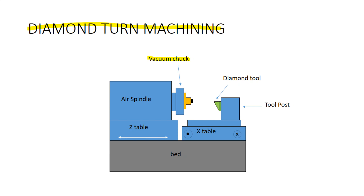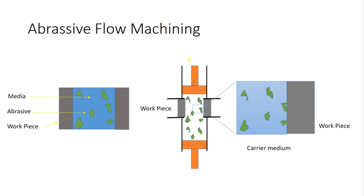Now let's see what abrasive flow machining is. The word 'abrasive' means small hard particles — I'm highlighting the abrasive parts here. 'Flow' means to make them move, and 'machining' means to remove material. The abrasive particles are suspended in a media, this media is moved inside a workpiece, and these abrasive particles rub against the workpiece and remove material from it.